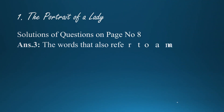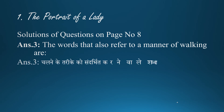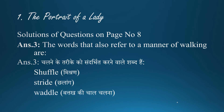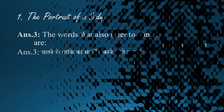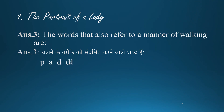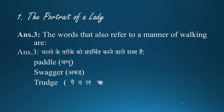Answer 3: The words that also refer to a manner of walking are — Chalne ke tarike ko sandarbhit karne wale shabd hain: Shuffle (mishran), Stride (chalang), Waddle (buttak ki chaal chalna), Paddle (chappu), Swagger (akar se chalna), Trudge (mushkil se chalna), Slog (aage badhna).